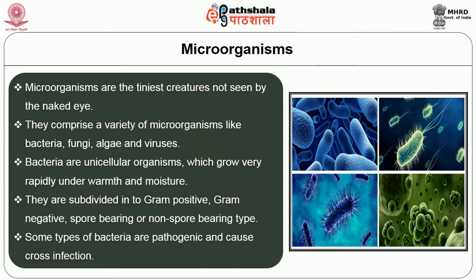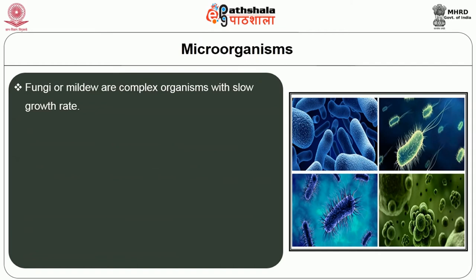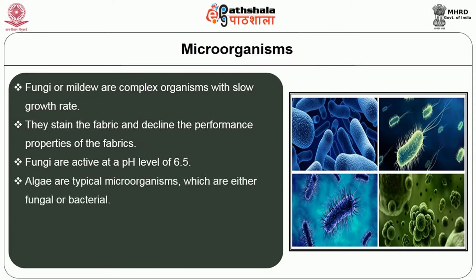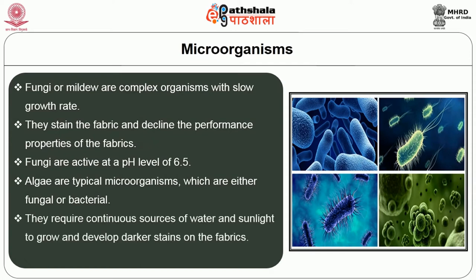Some types of bacteria are pathogenic and cause cross-infection. Fungi are mildew or complex organisms with slow growth rate. They stain the fabric and decline the performance properties of the fabrics. Fungi are active at a pH level of 6.5. Algae are typical microorganisms which are either fungal or bacterial. They require continuous sources of water and sunlight to grow and develop darker stains on the fabrics. Algae are active in the pH range of 7–8.